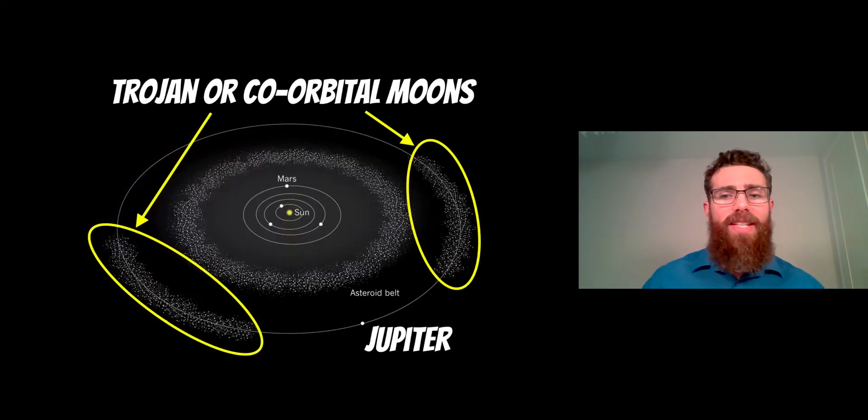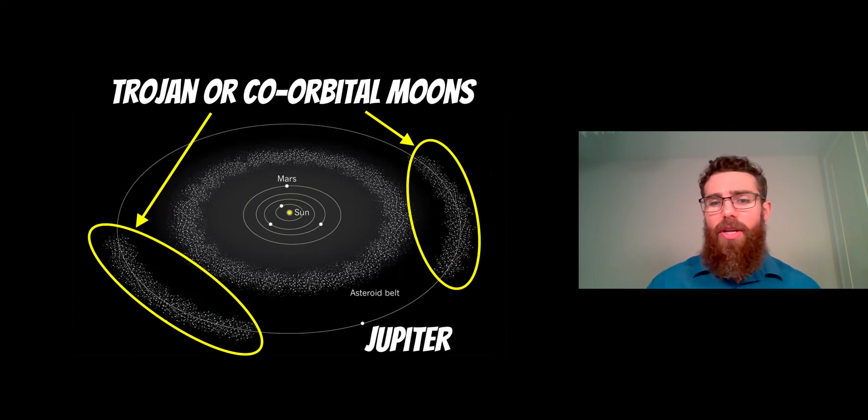The best example really in the solar system is the Trojan asteroids of Jupiter. Jupiter is at the bottom here on the diagram, and the circle denotes its orbit. On the same orbit as Jupiter, you've got these two large groups of asteroids—one 60 degrees in front and one 60 degrees behind. There are lots of these asteroids in there, and they are known as the Trojan asteroids of Jupiter.